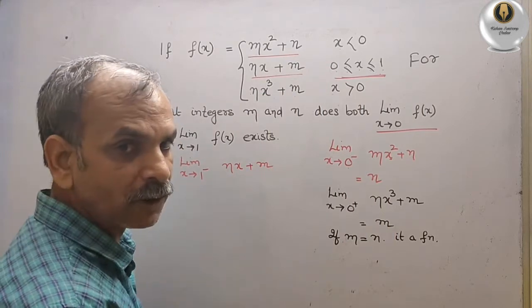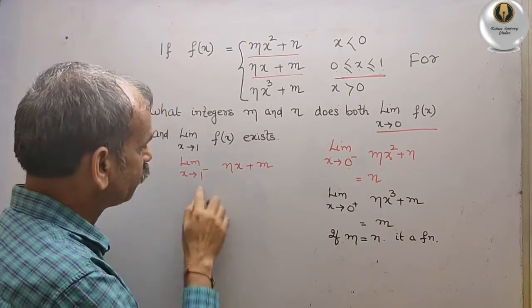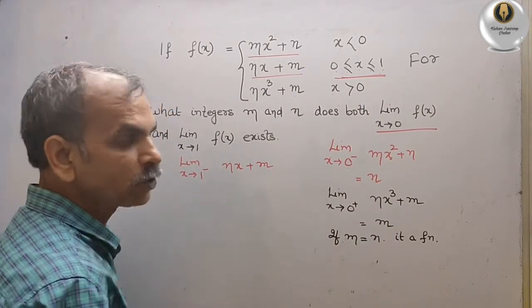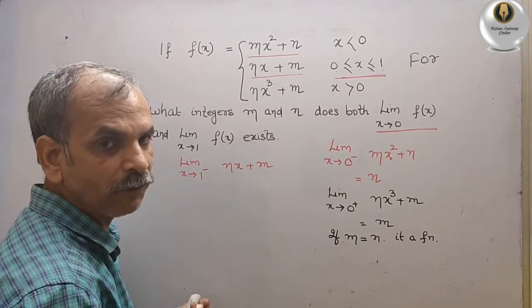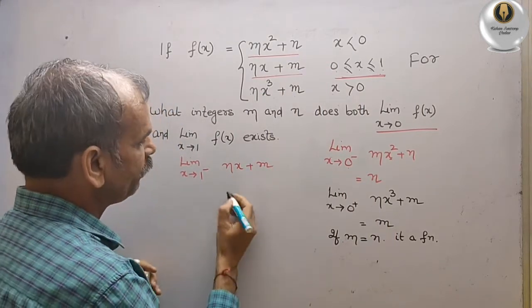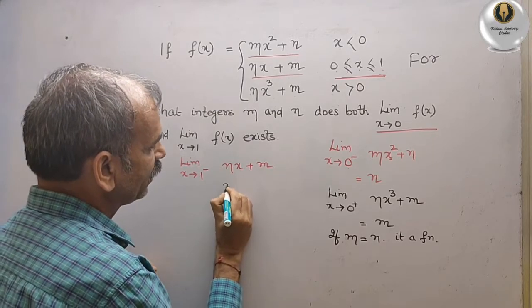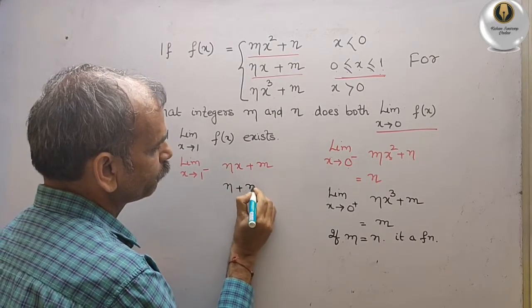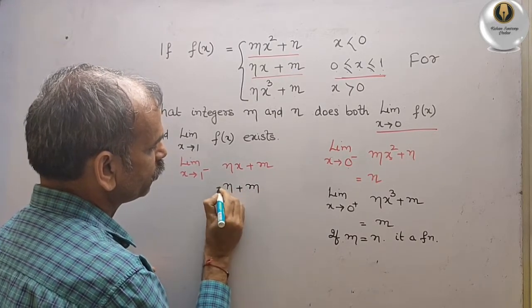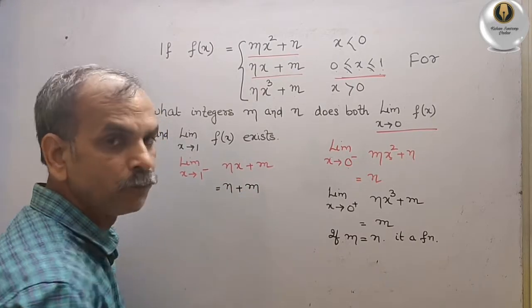Substitute 1 in place of x. We will get n times 1 plus m, which is n + m.